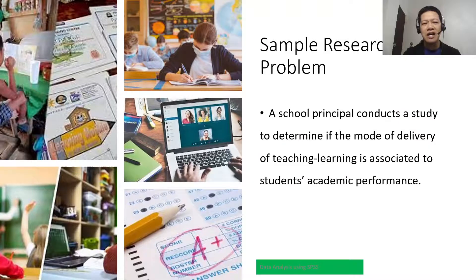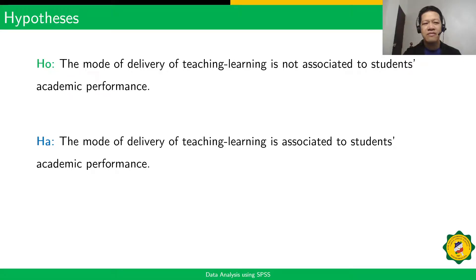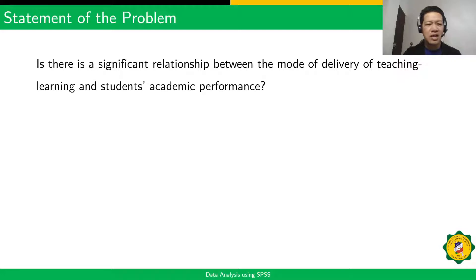Let's say those assumptions were satisfied in this research problem, then we can use the CHI-squared test for independence. A school principal conducts a study to determine if the mode of delivery of teaching learning is associated to a student's academic performance. The statement of the problem can be stated as: Is there a significant relationship between the mode of delivery of teaching learning and student's academic performance?